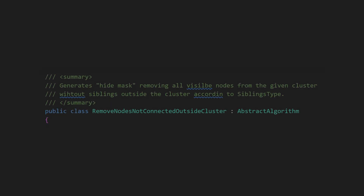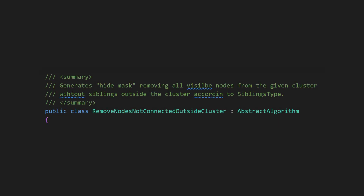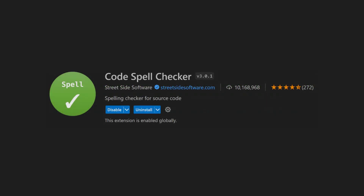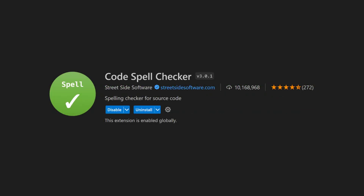Number seven: typos. Even though the human brain is perfectly capable of understanding even the weirdest typos, they still decrease the readability of the code and may even lead to confusion for non-native speakers. The most sustainable solution to repair this broken window is, of course, to ensure that all team members install a good spell checker for their IDEs.